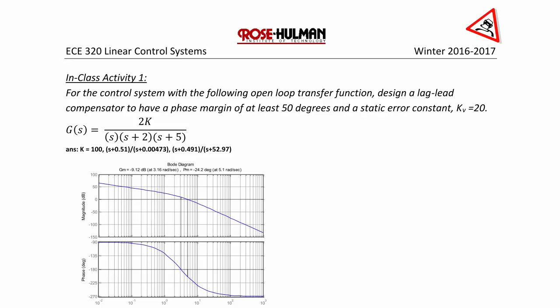g of s is equal to 2k over s times s plus 2 times s plus 5. Notice that I have provided the answers here in case you would like to try the problem first before looking at the solution.